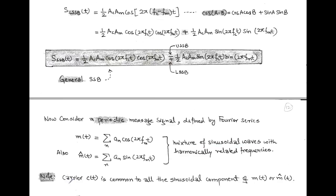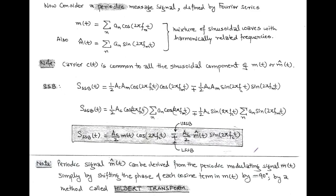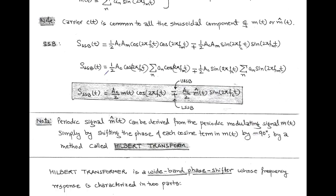We consider the carrier signal as common for all sinusoidal components of m(t) or m̂(t). Accordingly, for a periodic message signal, the SSB wave is written as s(t) = (A_C/2)·cos(2π·f_C·t)·Σaₙ·cos(2π·f_M·t) ∓ (A_C/2)·m̂(t)·sin(2π·f_C·t). The general single sideband equation is: (A_C/2)·m(t)·cos(2π·f_C·t) ∓ (A_C/2)·m̂(t)·sin(2π·f_C·t), with a minus sign for upper SSB and a positive sign for lower SSB.